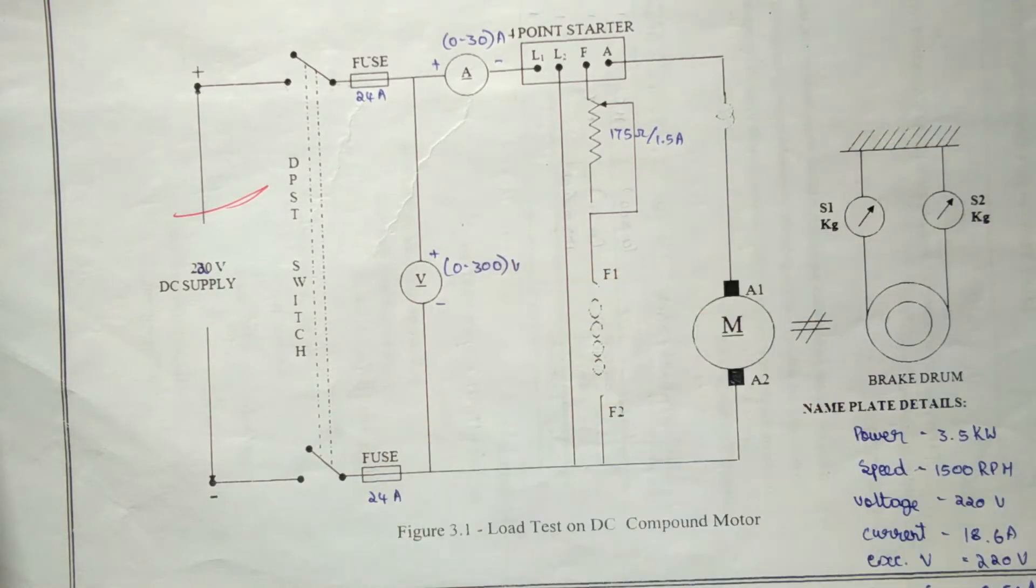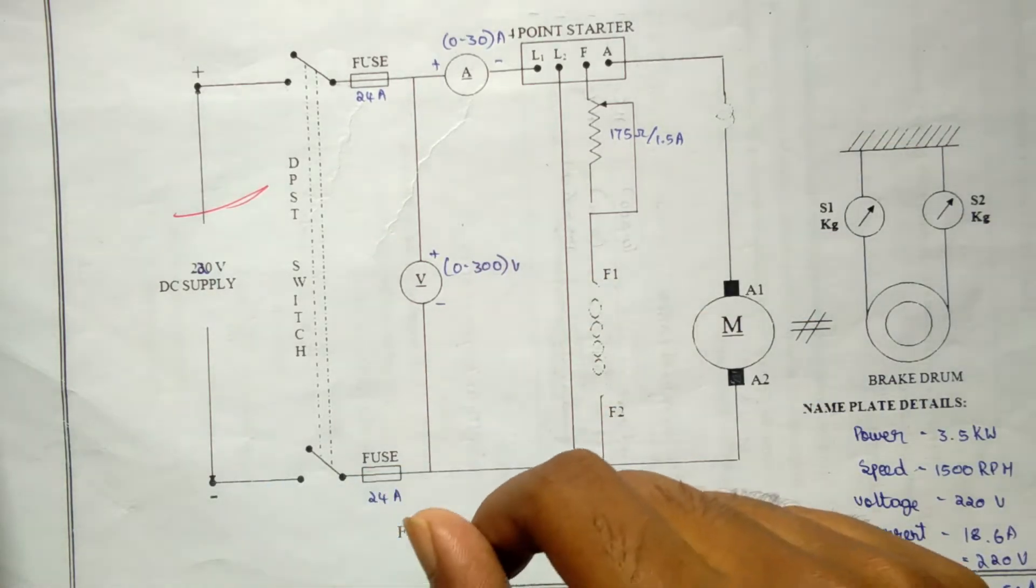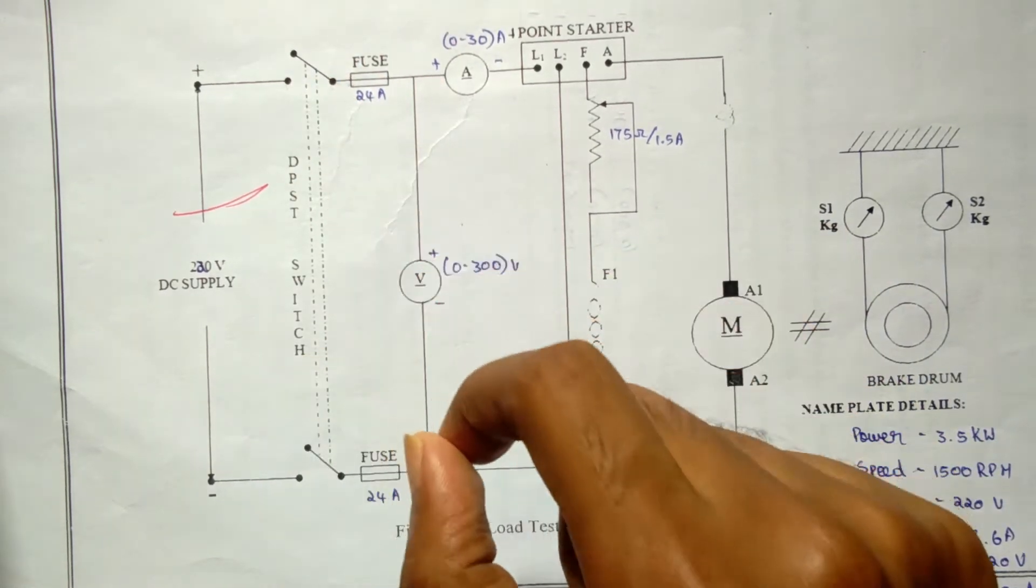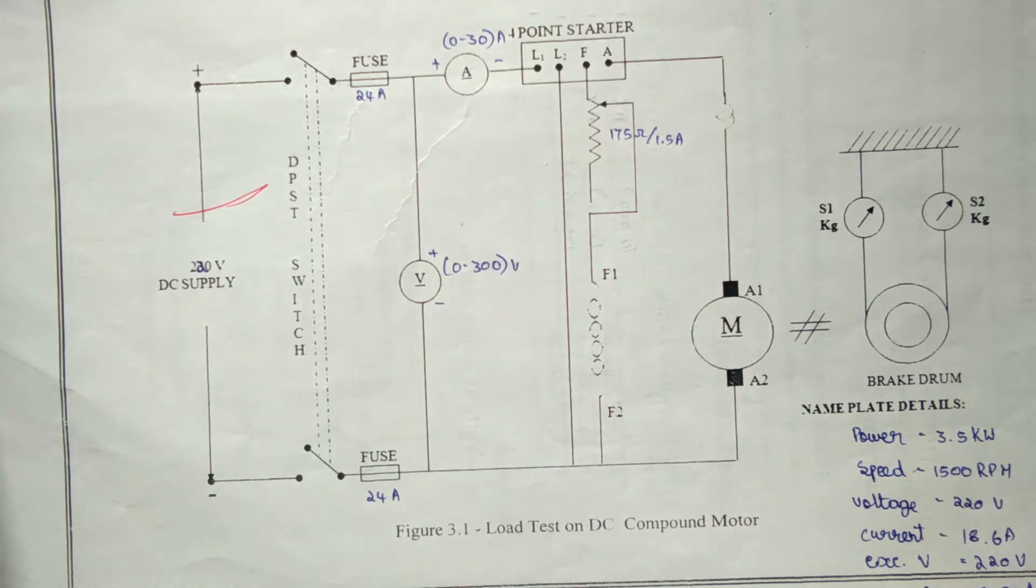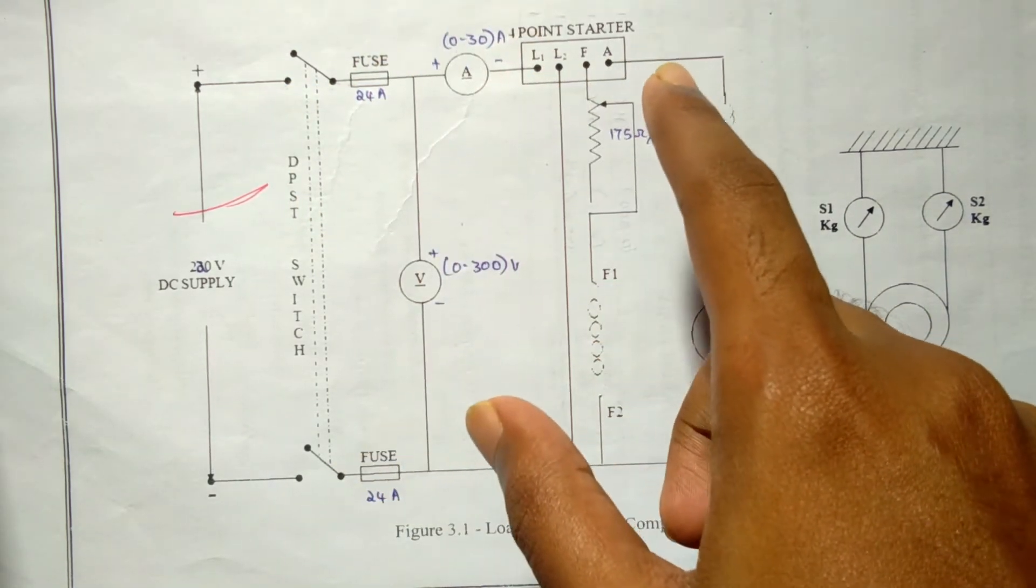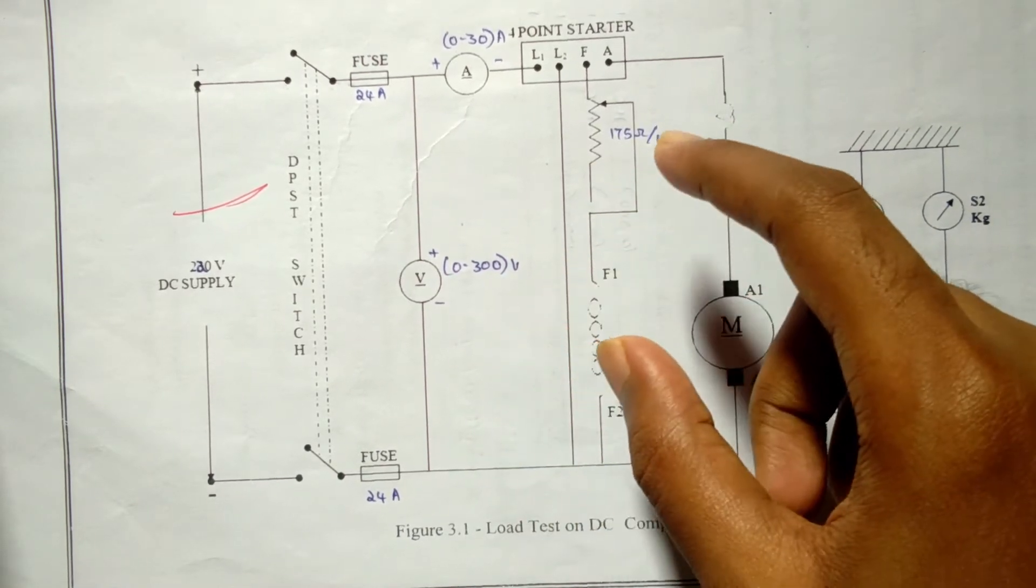Before going to the procedure, we should follow the precautions. The fuse is selected such that its rating is 120% of the rated current. It is ensured that the starter is in the off position.